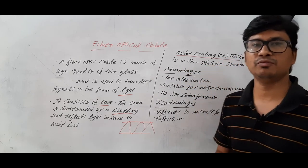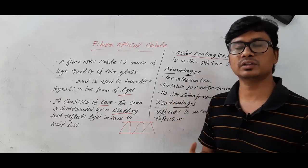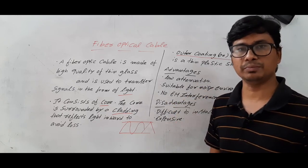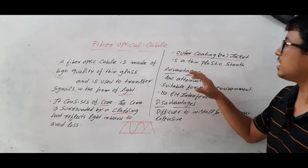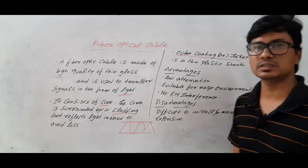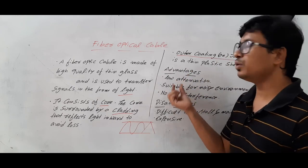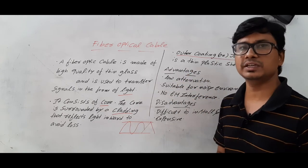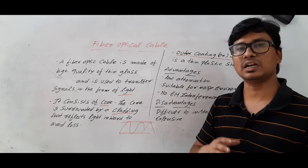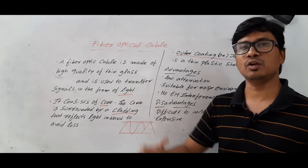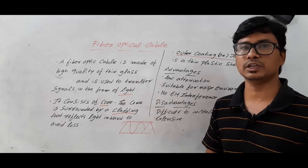The outer coating or jacket is a thin plastic seal which protects the cable from the outside environment. One advantage of fiber optical cables is low attenuation, meaning the signal can be transferred over a long distance without any problem.